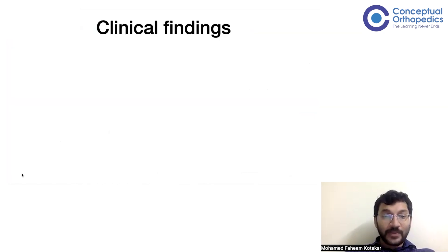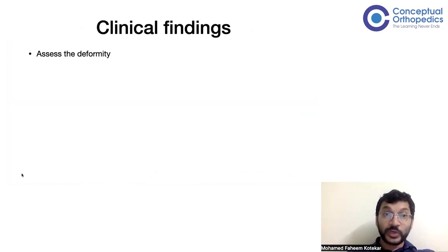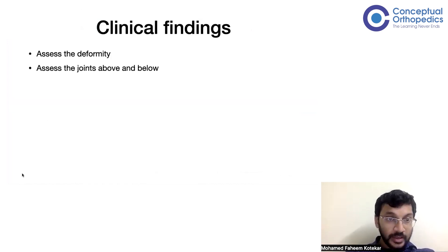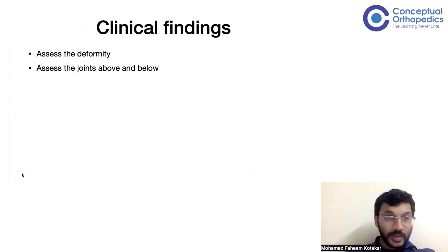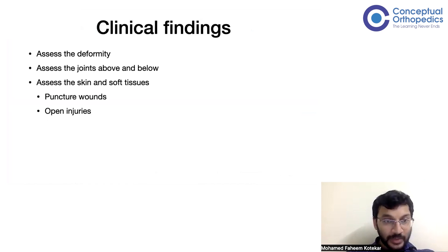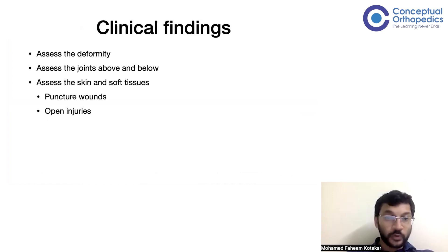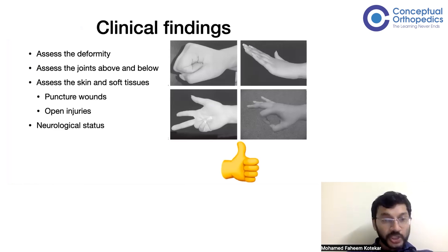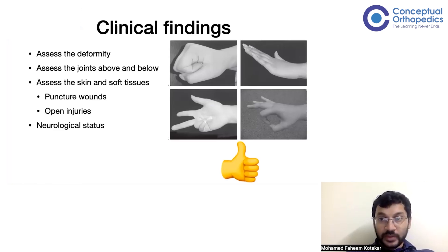When the child comes to you, first assess the deformity. Make sure it is an isolated injury or, if it is polytrauma, assess accordingly. Look at the joint above and below, assess the soft tissue and skin for puncture wounds or open injuries, and check the neurological condition.